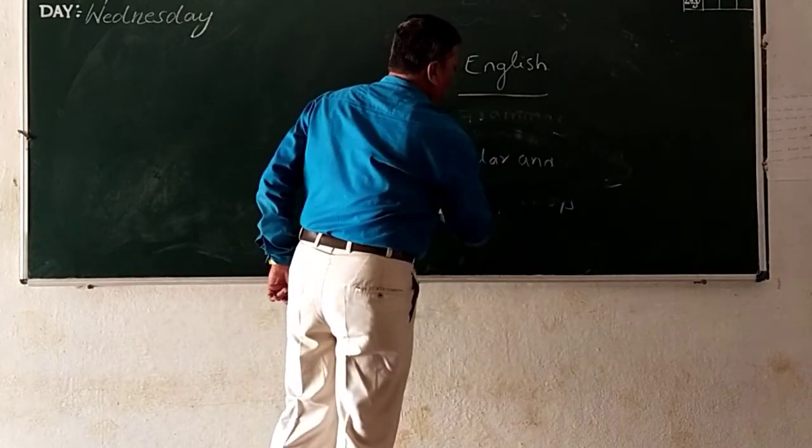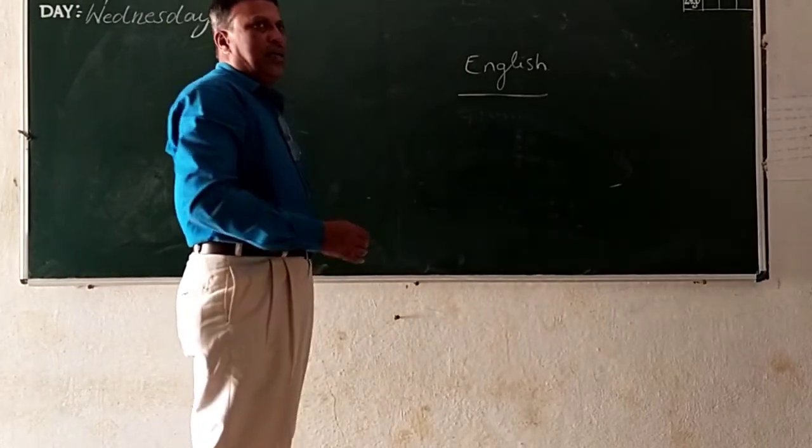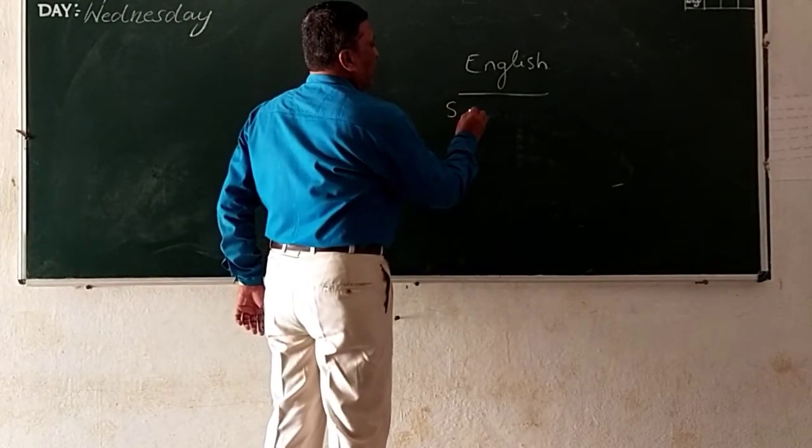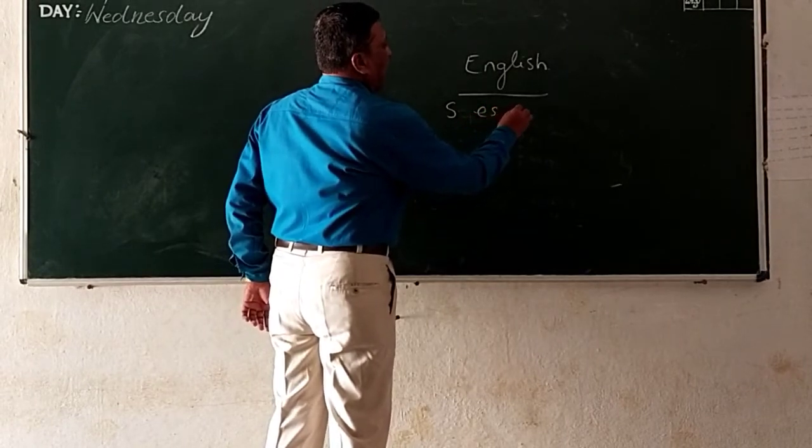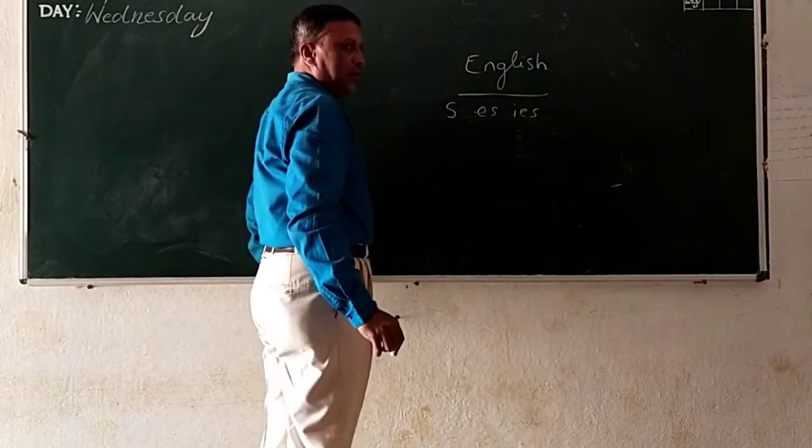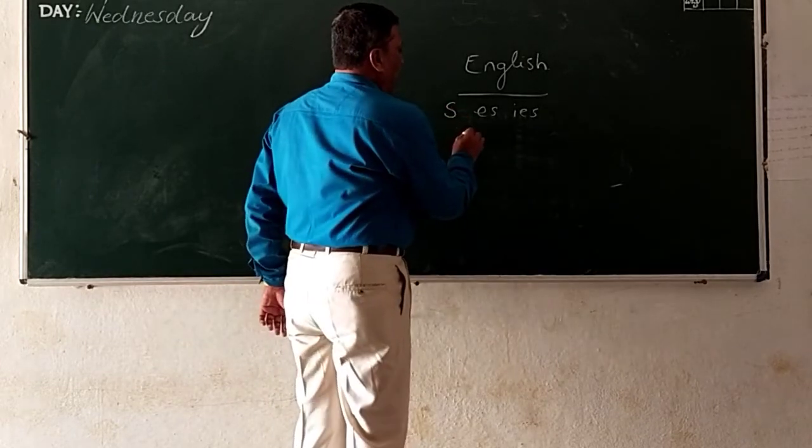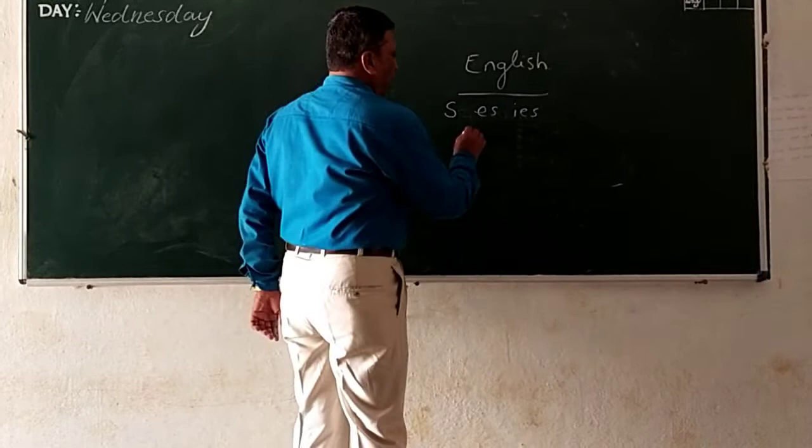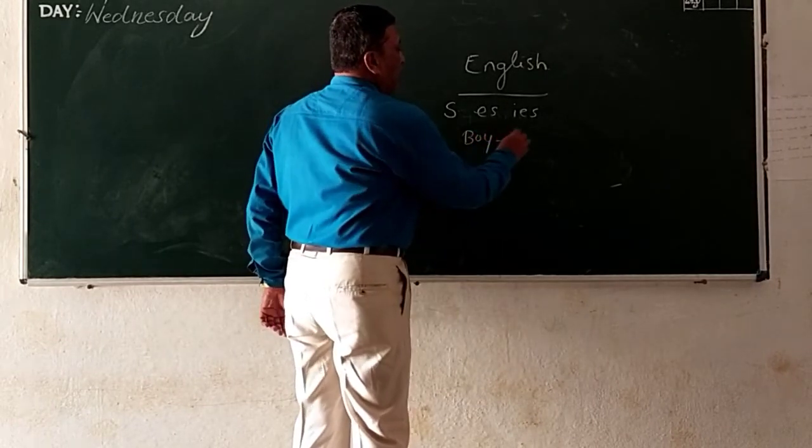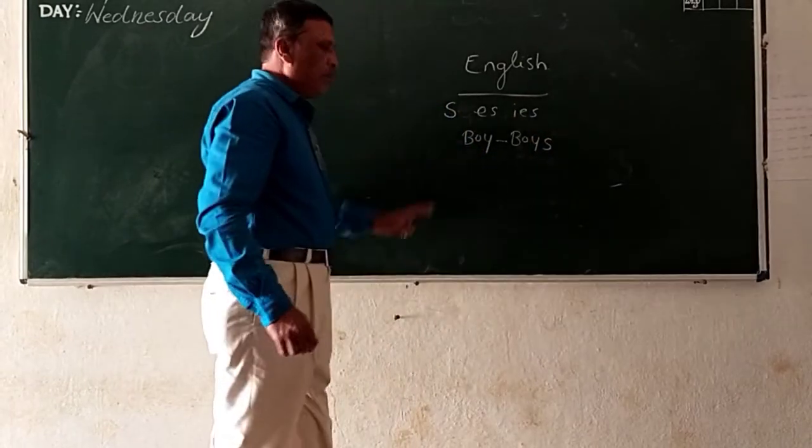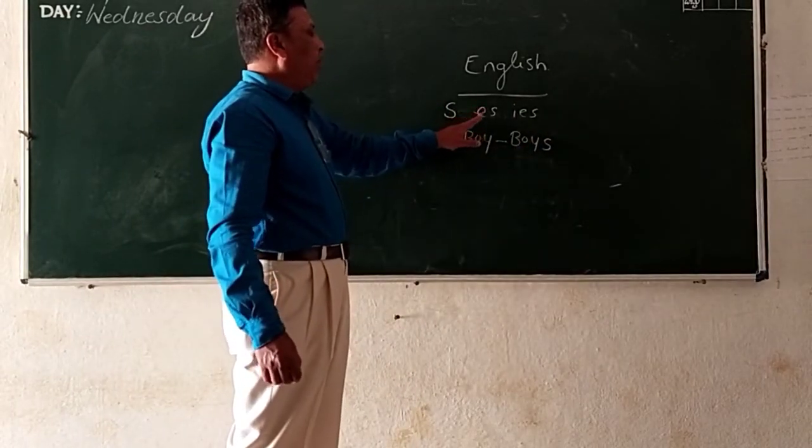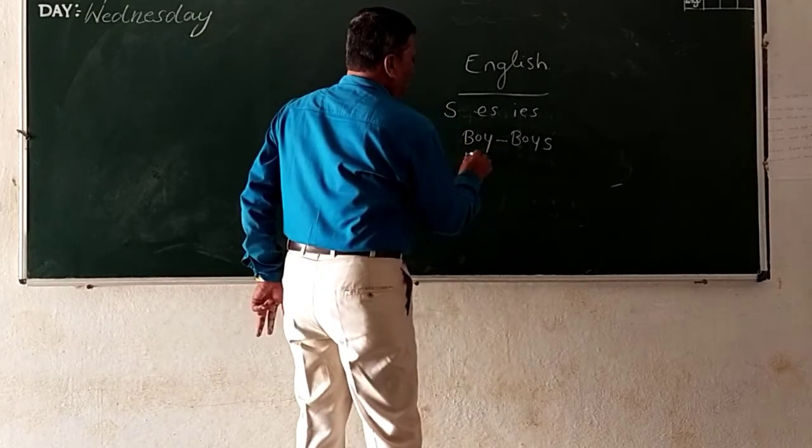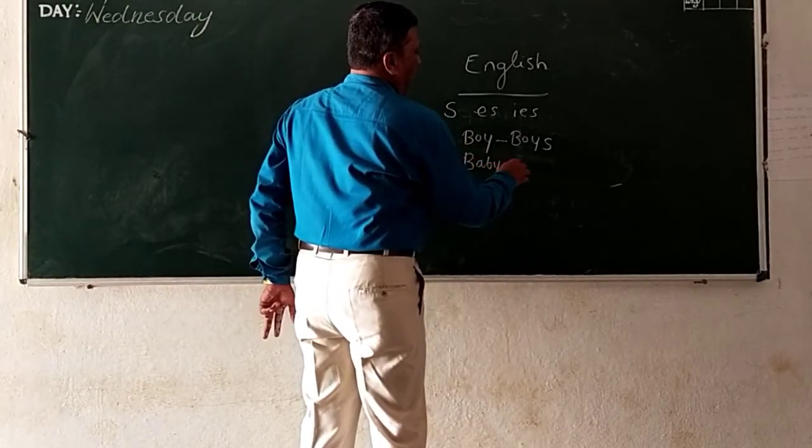Just you see, here I will give some examples. Actually, in singular and plural we are going to use S, ES, IES. I gave one example earlier: baby. Baby becomes babies. It's IES.